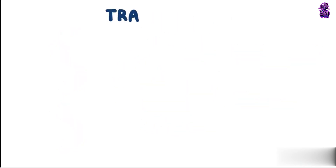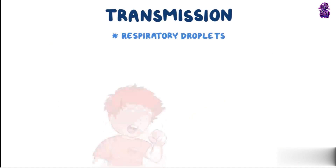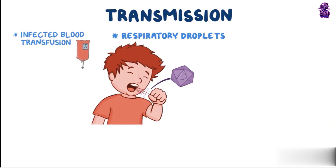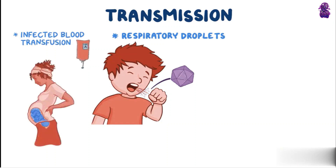Parvovirus B19 is primarily transmitted by respiratory droplets when someone coughs or sneezes. You can also catch it via an infected blood transfusion, and a pregnant female can also transmit it through the placenta to her unborn child.